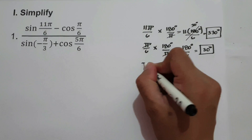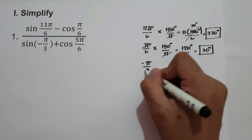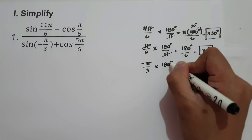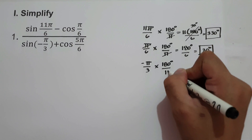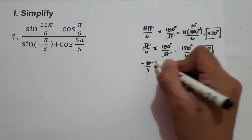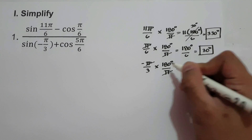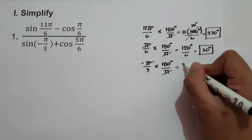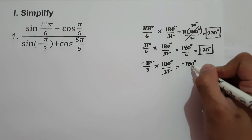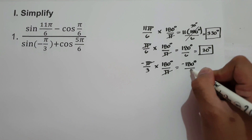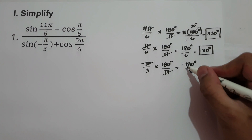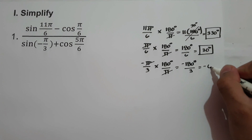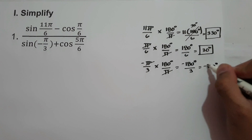Next, we have negative π over 3. Let us multiply by 180 degrees over π. We cancel π. Negative 1 times 180 degrees is negative 180 degrees, divided by 3. Negative 180 degrees divided by 3 is negative 60 degrees.